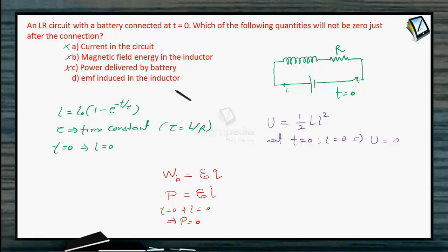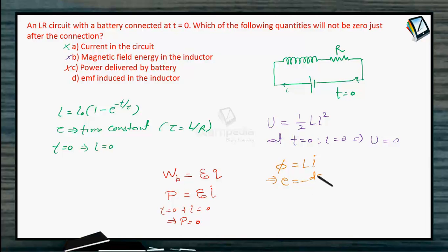The only remaining option is D: EMF induced in the inductor. It has to be correct — let us verify. The flux of the inductor φ = L·I, and the EMF induced in the inductor is given as -dφ/dt, which equals -L·(dI/dt).